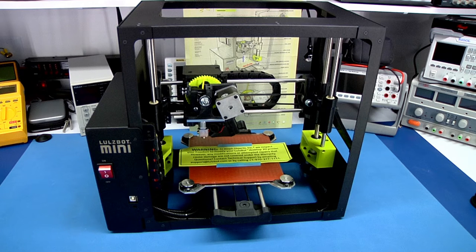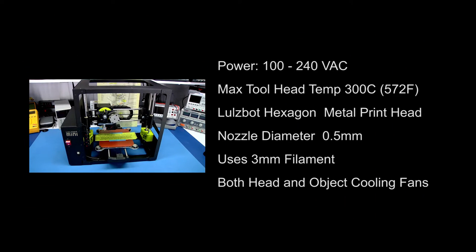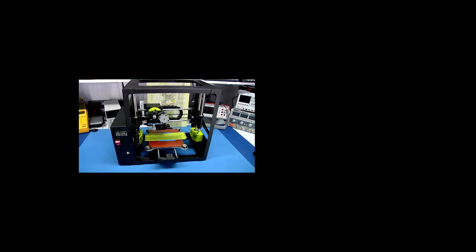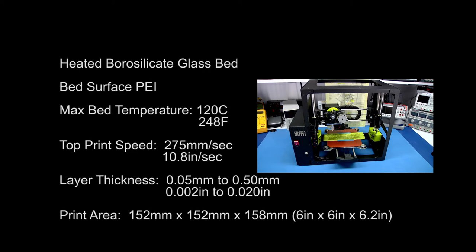Here's a look at the 3D printer with all the packing materials removed. Power is 100 to 240 volts AC, 50 or 60 Hertz. The maximum head temperature is 300 degrees C, and the hexagon is an all-metal print head with a nozzle diameter of 0.5 millimeters. It uses three millimeter filaments. For cooling purposes, both the head and the object have cooling fans. We have heated borosilicate glass bed, and the bed surface is covered with a PEI film. The maximum bed temperature is 120 degrees C. The top print speed is 275 millimeters per second. Layer thicknesses are adjustable from 0.05 millimeters to 0.5 millimeters, and the print area is 152 millimeters by 152 by 158 millimeters, approximately 6 inch cubic volume.